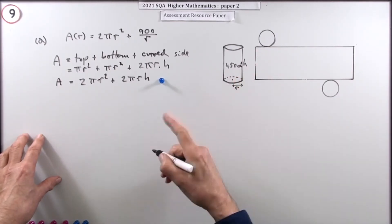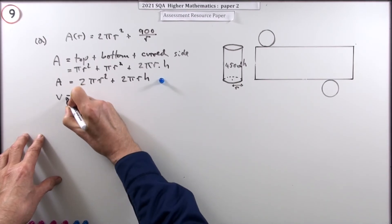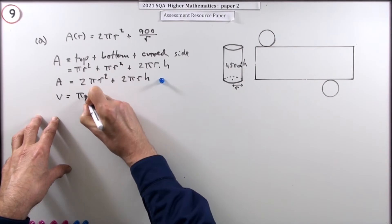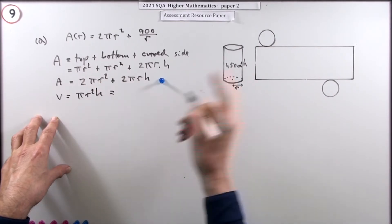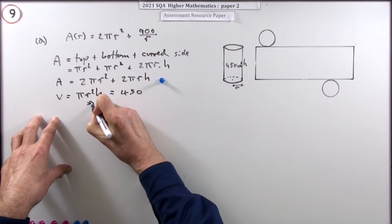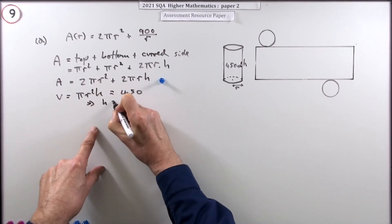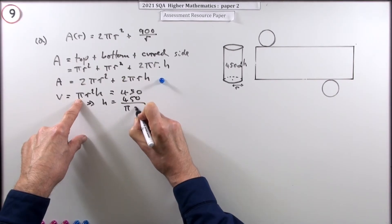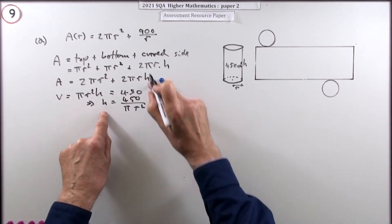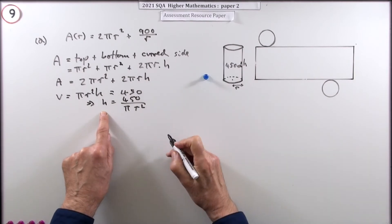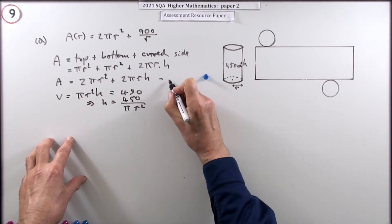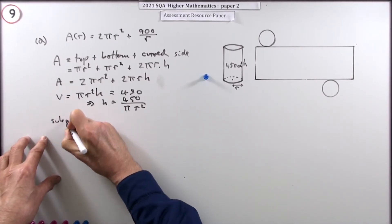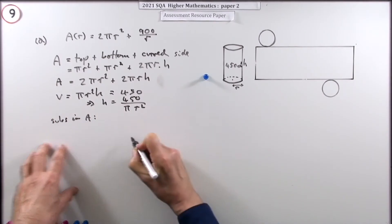So what you can see now is this. That volume, I know what the volume's given by. The volume of a cylinder, its area base times height, is pi r squared h, and it tells me it's 450. So that means I can rearrange that to read h equals 450 over pi r squared. So now you can substitute that in there.